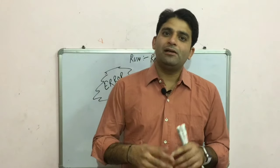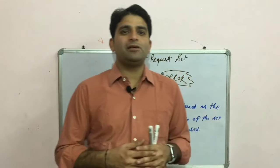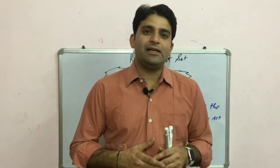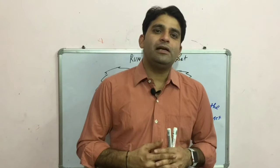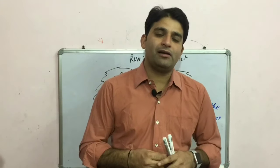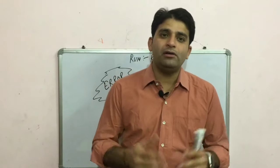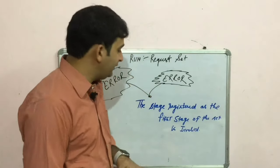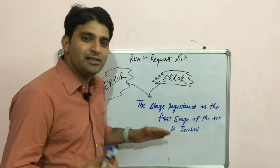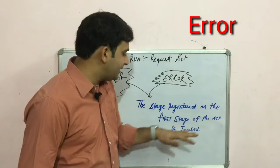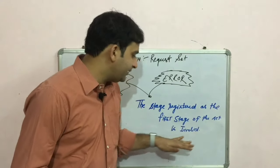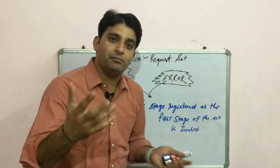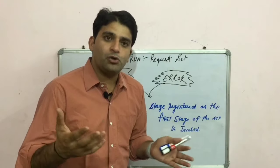Today in this session, we are talking about an error which is related to the request set. When we submit our request set, it immediately goes into an error. The reason behind that — if we click on the log section of that particular request set, we see this error: 'The stage registered as the first stage of your set is invalid.' This means any stage of our request set may be invalid.